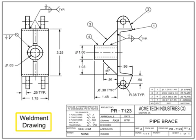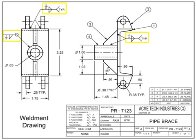Weldment drawings are a unique form of detail drawings. Weldments occur when multiple pieces are welded together to form a final item. Weldments are not assemblies, due to the fact that their component parts are not stocked or sold separately, have no use as stand-alone items, and are not detailed on separate drawings. Weldment drawings can also be called inseparable assembly drawings. Welding symbols that indicate the length, type, and other information about the weld are shown in the field of the drawing to indicate the location of the welds.